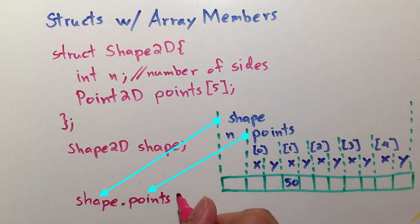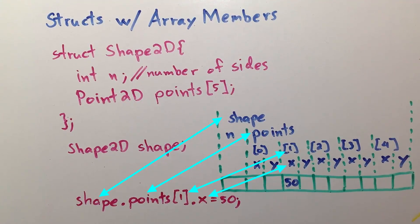get the child points, access the second element, get the child x, and give it 50.